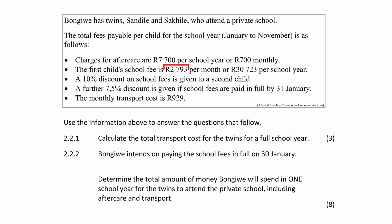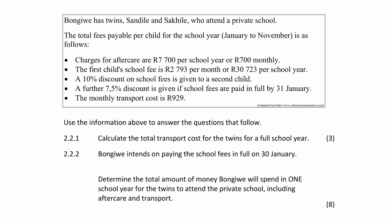School fees cost 2,793 Rand per month or an annual fee of 30,723 Rand for the first child. A 10% discount on school fees is given for the second child. A further 7.5% discount is given if the school fees are paid in full by the end of January. The monthly transport cost per child is 929 Rand.